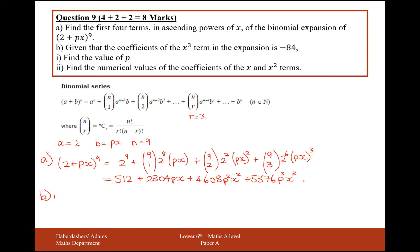Part b, part i, is given that the value in front of the x cubed is minus 84, find the value of p. Okay, so x cubed, that's this value here. So, 5,376 p cubed equals minus 84.